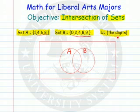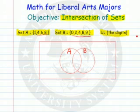If you're in both A and B, then you're going to go in this section right here. If you're not in A or B, you're going to come on the outside of this. So let's just start putting them in. Our universal set is the set of all digits.